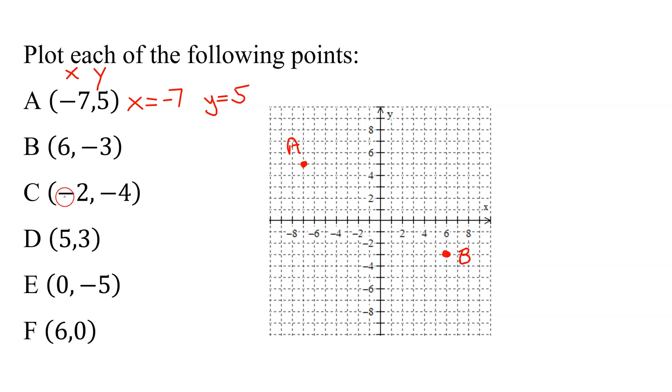The next point has the coordinates negative 2, negative 4. Start at the origin. x is negative 2, go left 2. y is negative 4, so you're going to have to go down 4 units. So there's point C.